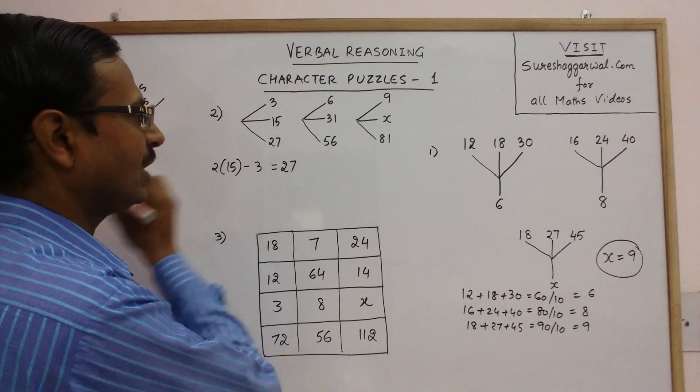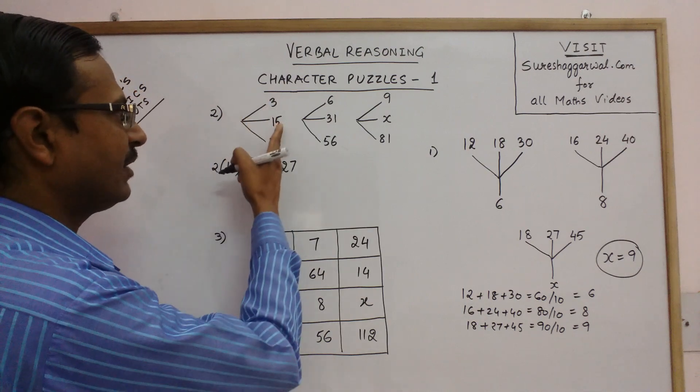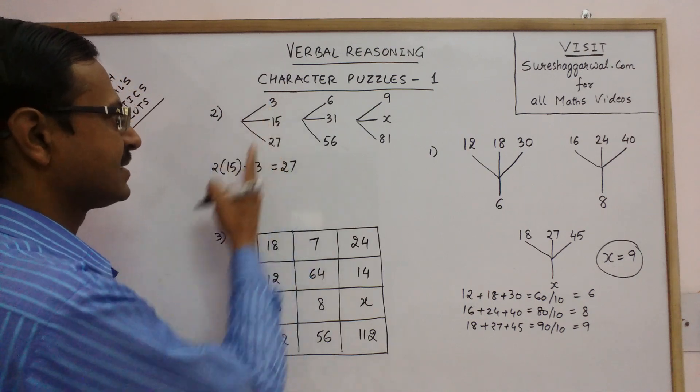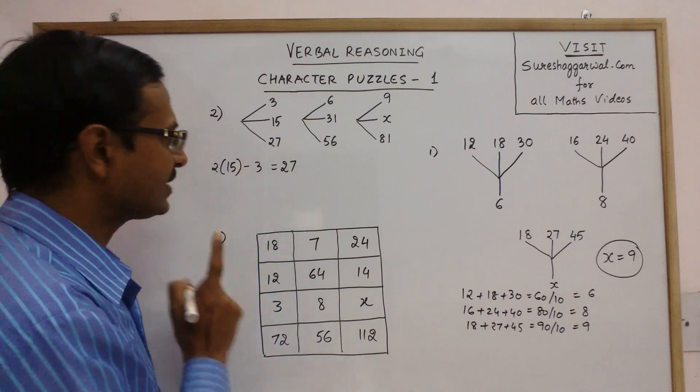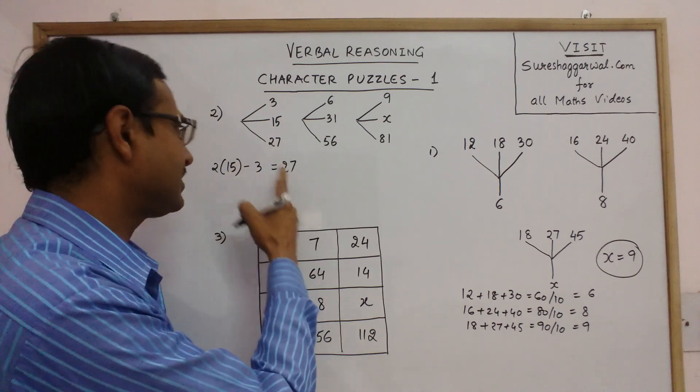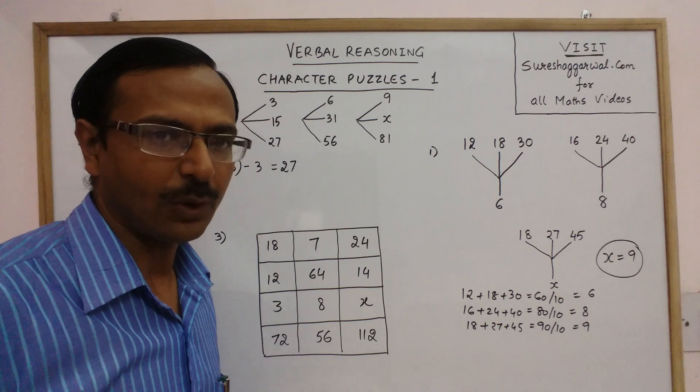So if you subtract this upper number, double of this minus this, you get the lower number. Now, let us see, this is one of the patterns, it may be present in the second one or not.